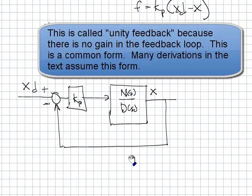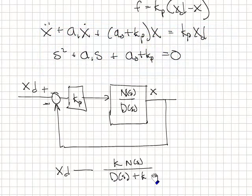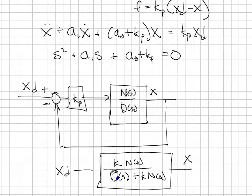Follow through with the block diagram algebra, and we end up with x desired as the input, k n of s over d of s plus k n of s. We now have a new system that has a different characteristic equation. The original plant was d of s. The new plant has a characteristic equation d of s plus k n of s. Input xd, output x.